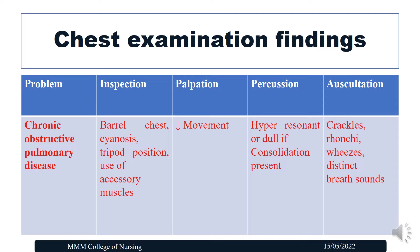In palpation, there will be decreased chest movement. In percussion, there will be hyper-resonant or dull sound if there is consolidation in the lung tissues — either a dull sound or a hyper-resonant sound can be heard. On auscultation, there will be crackles and rhonchi. These are the abnormal chest findings for a patient with chronic obstructive pulmonary disease.